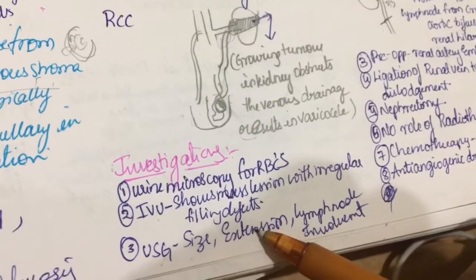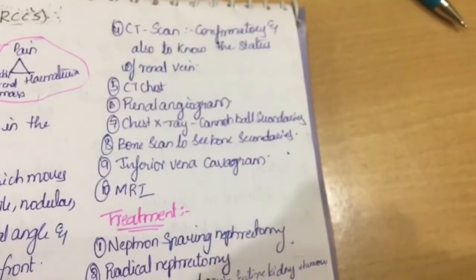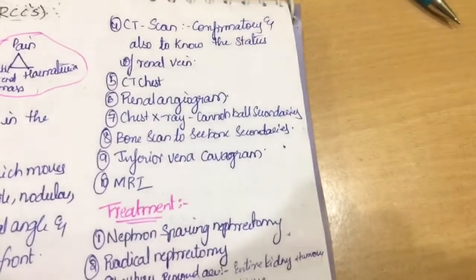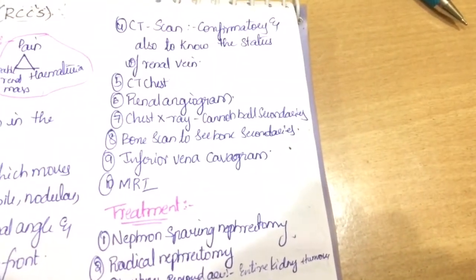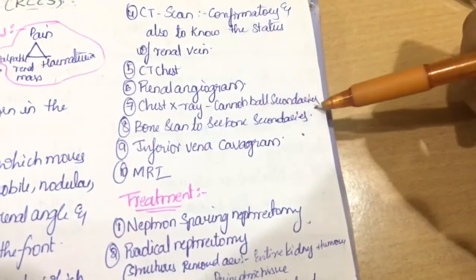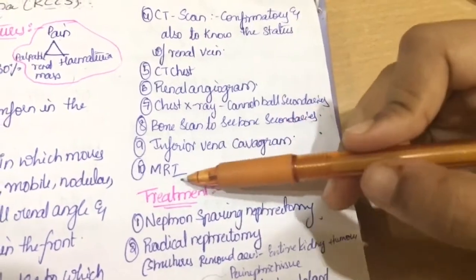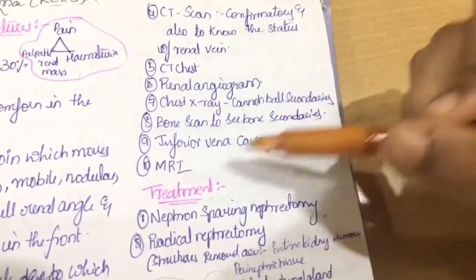Ultrasound abdomen, we can see size, extension, lymph node involvement, etc. And in CT scan, confirmatory test is done by CT scan. CT chest, renal angiogram, chest x-ray, cannon ball secondaries are present. Bone scan to see bone secondaries, inferior vena cava angiogram or inferior vena cava gram, MRI.